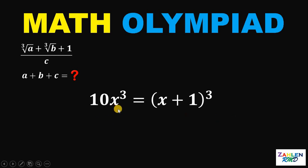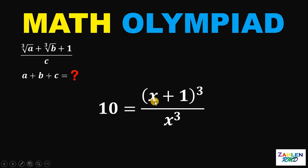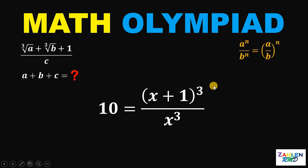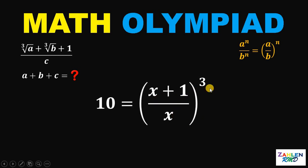Our equation now becomes 10x cubed equals x plus 1 raised to 3, since x cubed plus 3x squared plus 3x plus 1 is x plus 1 raised to 3, and 9x cubed plus x cubed is 10x cubed. Dividing both sides by x cubed gives us 10 equals x plus 1 raised to 3 over x cubed, which by laws of exponents equals the quantity x plus 1 over x, raised to 3.